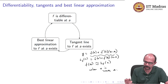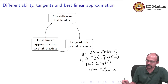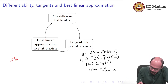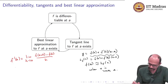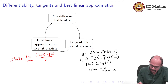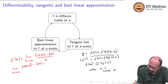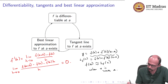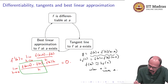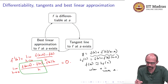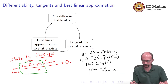We can rewrite the differentiability definition in terms of this formula, and that is what I really want to emphasize. Remember that f'(a) is the limit as h tends to 0 of [f(a+h) − f(a)] / h. I can rewrite this as: the limit as h tends to 0 of [f(a+h) − f(a) − f'(a)·h] / h equals 0. Because you can break this limit into two parts — the first part is the original limit, and the second part when divided by h gives f'(a), so bringing them together gives exactly this limit.